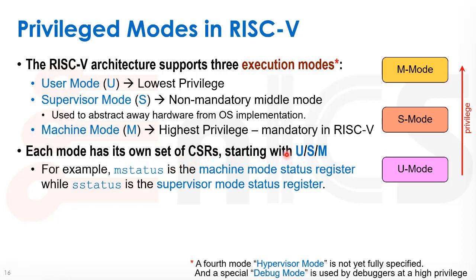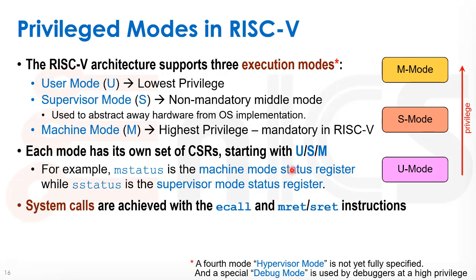Each mode has its own set of CSRs, and we differentiate between them by the first letter of their name. If a CSR name starts with 'u' it belongs to user mode, if it starts with 's' it belongs to supervisor mode, and 'm' belongs to machine mode. For example, mstatus is the machine mode status register, while sstatus is the supervisor mode status register. The names can be a bit confusing since the first letter indicates the mode rather than the functionality, but you get used to it.